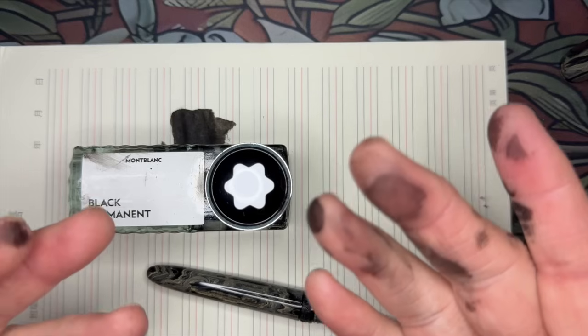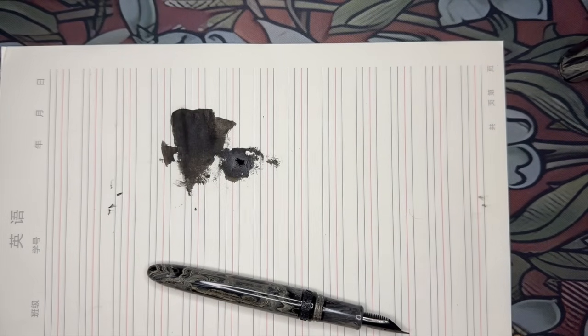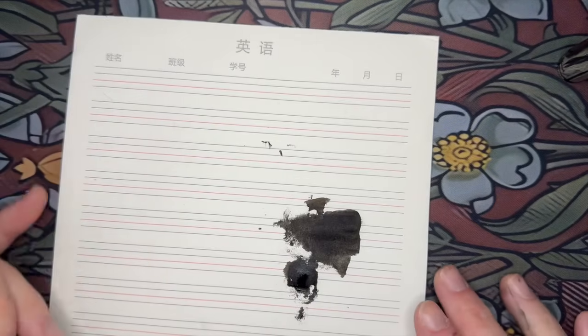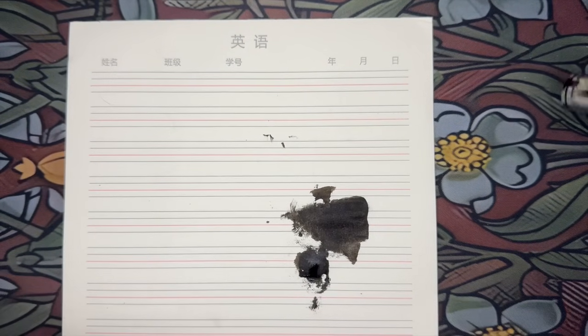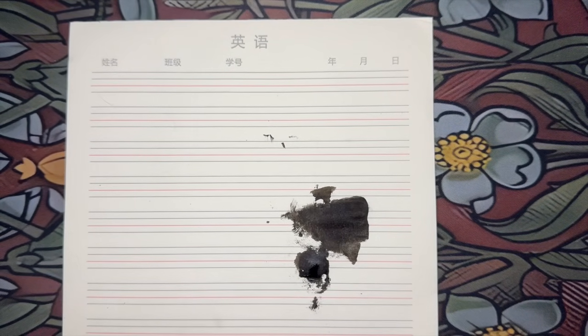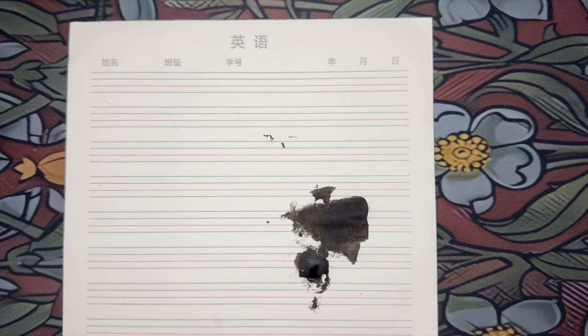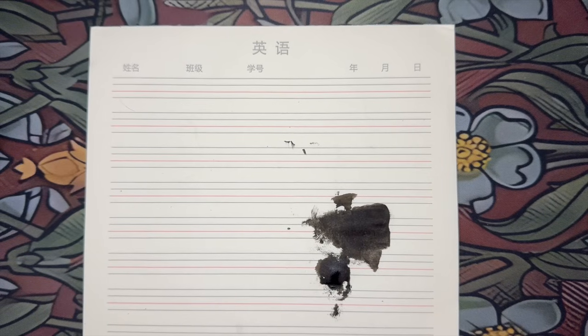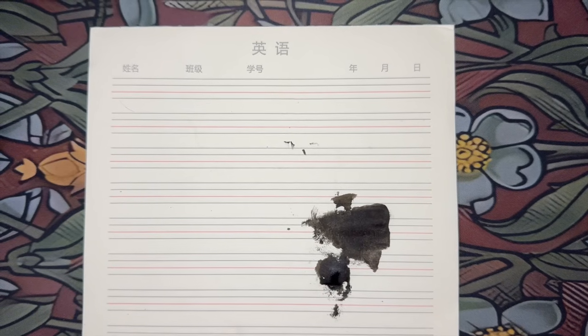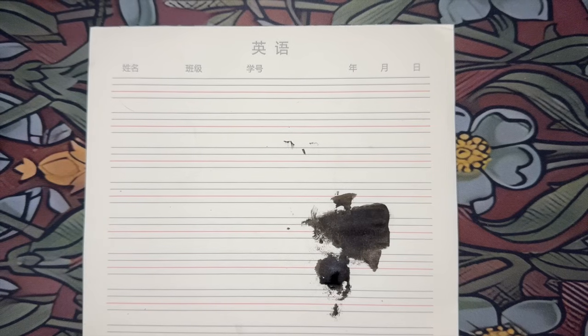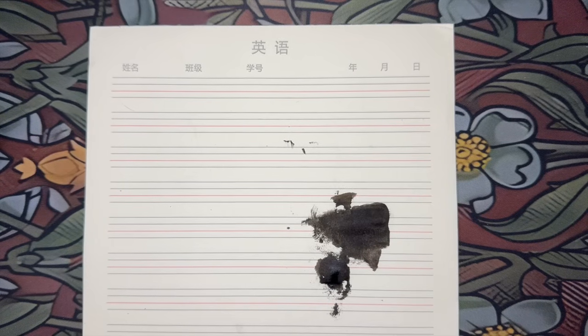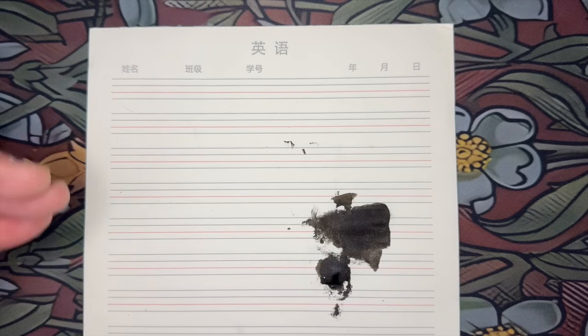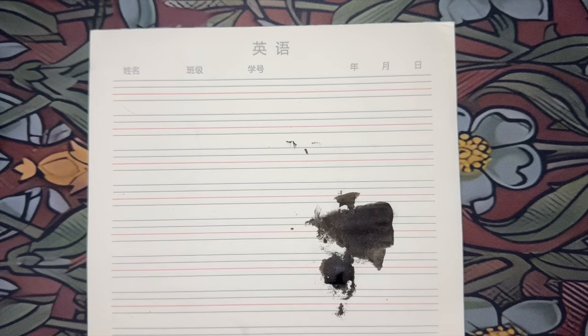So there we go, Montblanc permanent black, it's all over my hands. Let's hope it's not so permanent that I can't get it off of there. Lovely little Rorschach test here on the paper. This paper by the way you will see again soon in a how to approach this hobby on a budget. This is fountain pen friendly paper to practice your penmanship on that I purchased on Timo.